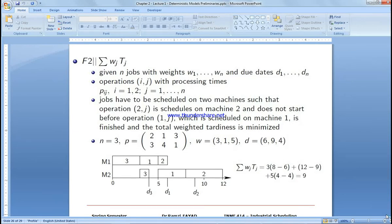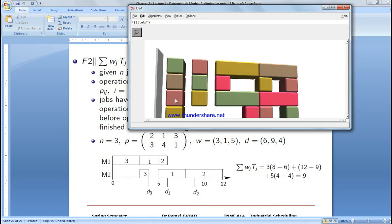In this case we have a flow shop with two machines and three jobs. The objective is to minimize weighted tardiness with no constraints. Let's see how to solve this using LEKIN software.